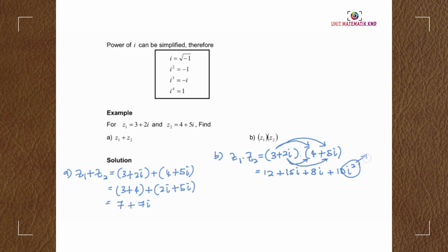So by substituting the value, we got 12 minus 10 plus 15i plus 8i.